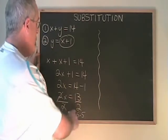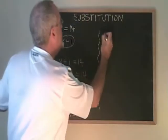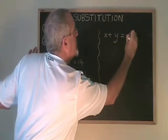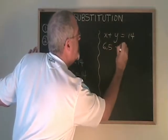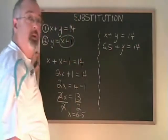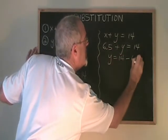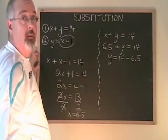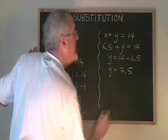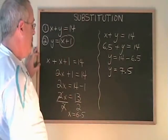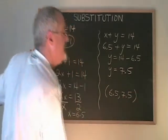How do we find the y? We take the x that we found and we plug it into either of the original equations. I'm going to use equation 1 again: x plus y equals 14, and I'm going to substitute 6.5 into the x position. 6.5 plus y equals 14. Isolating the y means moving the 6.5 to the other side where it becomes negative, and 14 minus 6.5 is equal to 7.5. We're finished. We have found the point where these two lines cross, which is going to be (6.5, 7.5). This is substitution.